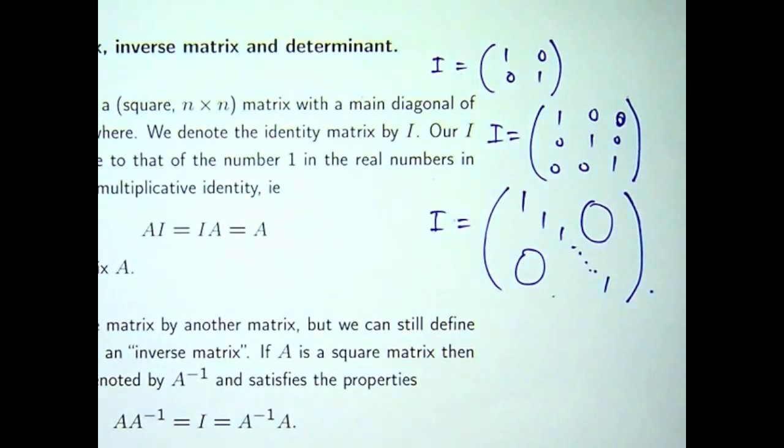So if I wanted to write down a general identity matrix with some elements, by the big 0s I mean just 0s everywhere else.